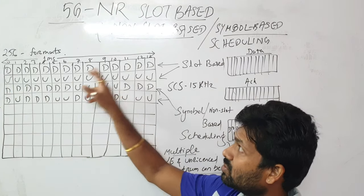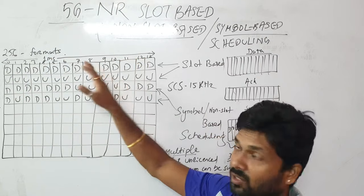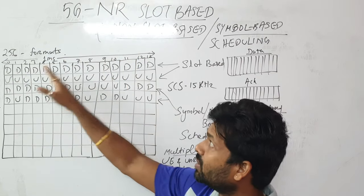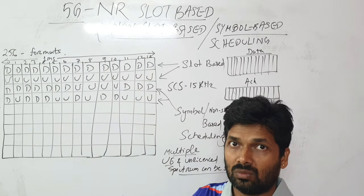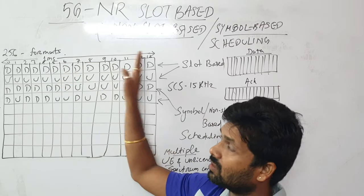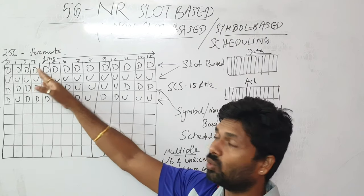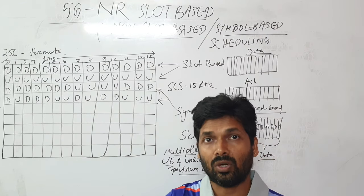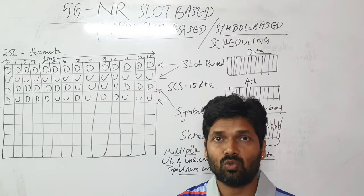All 0 to 13, that means 14 symbols in this particular radio subframe, in one slot, this is one millisecond. We are only transmitting for downlink - it could be data, control signaling, or anything. All 14 symbols can be used for downlink transmission.